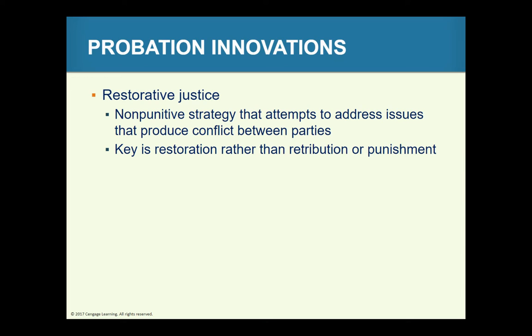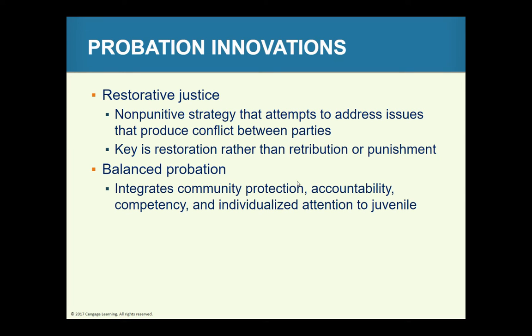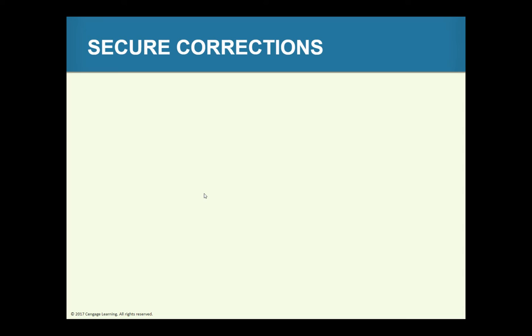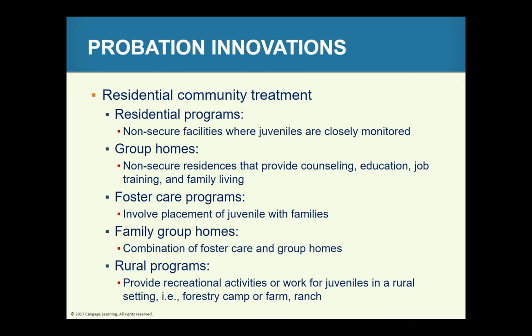Restorative justice holds that the offense is against a human relationship; victims and the community are central to the justice process. The first priority is to assist victims, and the second is to restore the community. The offender develops improved competency and understanding, and stakeholders share responsibilities through partnerships for action. This approach integrates community protection, accountability of the offender, and individualized attention to the offender. Juveniles must accept responsibility for their actions and have an obligation to society.